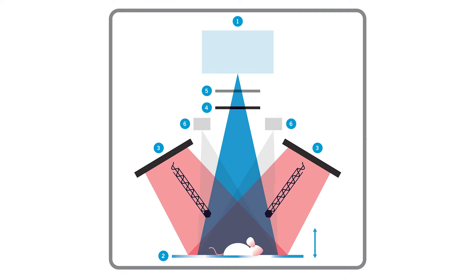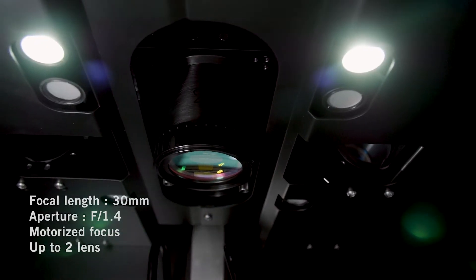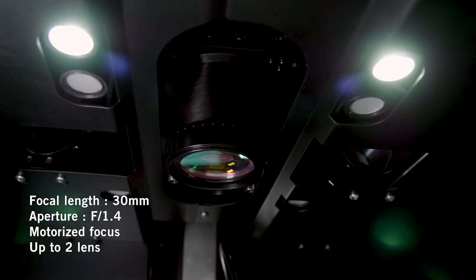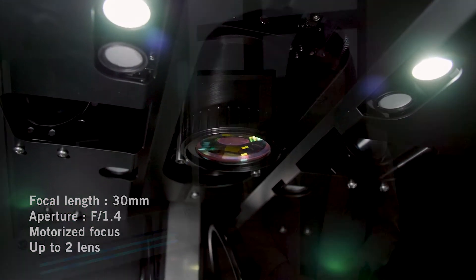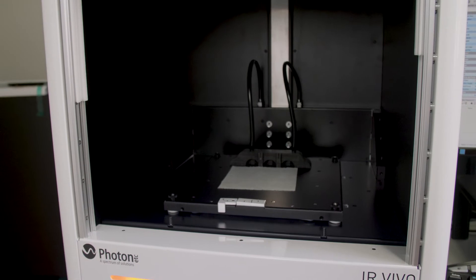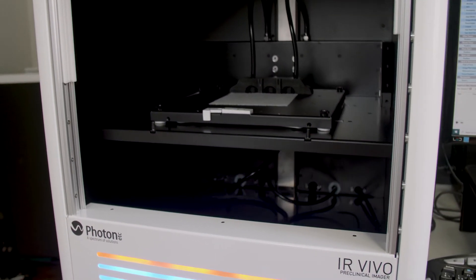So once the light hits the markers in the mouse, it emits fluorescence and it goes back to our lens system. The way we designed our lens system has a focal length of 30 millimeters and an aperture of 1.4. What's nice is that you don't have to worry about being in focus or not. We have designed an automatic motorized focus so you always stay in focus.